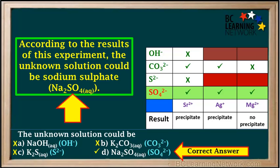To summarize, according to the results of this experiment, the unknown solution could be sodium sulfate, Na2SO4.